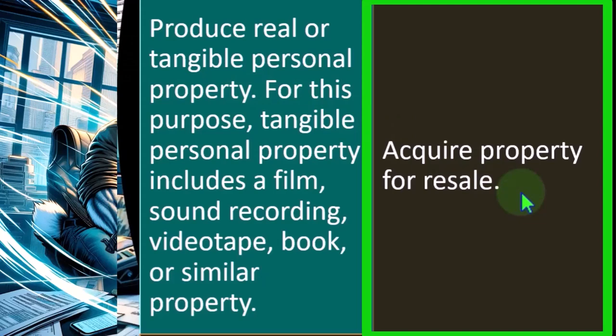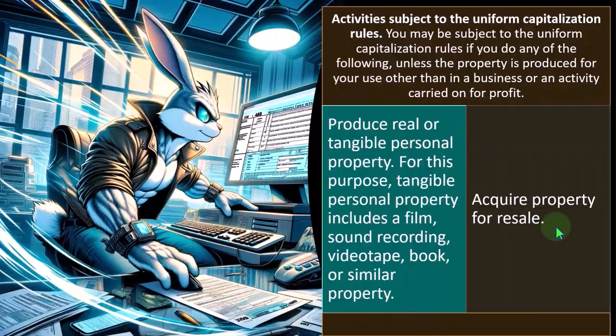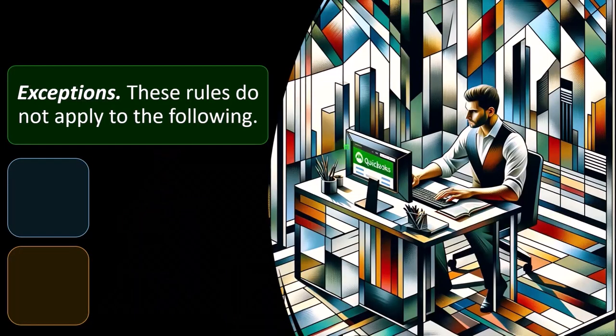The idea there being that instead of expensing it at the point in time we purchase it, or expensing it at the point in time that we consume costs in order to make the thing that we're making, we're basically making the inventory or the thing that we're going to sell. We're instead going to put it on the books as an asset and then expense it when we sell it, in the form of cost of goods sold, you would think.